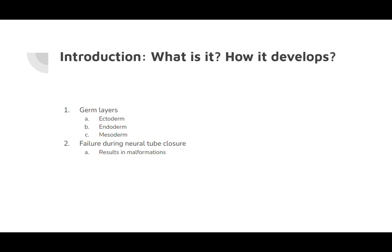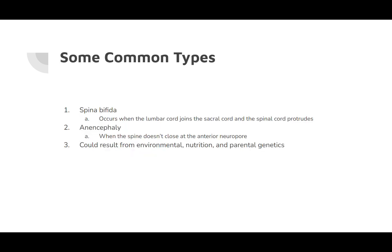When the tube doesn't close at the posterior neuropore, spina bifida could arise. This happens when the lumbar cord joins the sacral cord and the spinal cord protrudes through an incompletely fused spine, becoming externalized like a tail. The protruding part interferes with spinal cord functions and may lead to paralysis, since it hinders the flow of cerebrospinal fluid. The stress and weight of the protrusion on the brain may even push the cerebellum out in more severe cases.